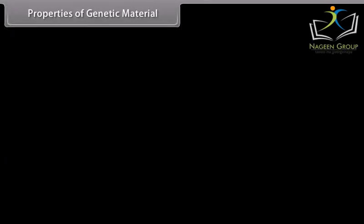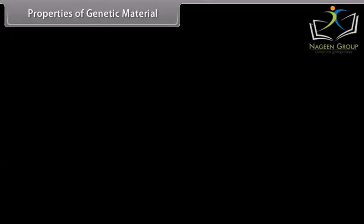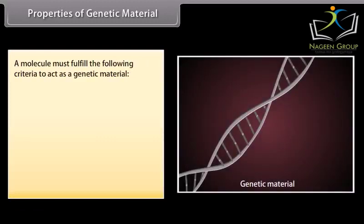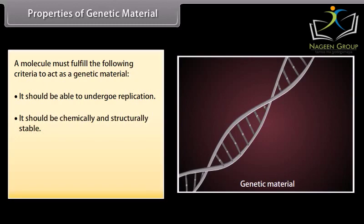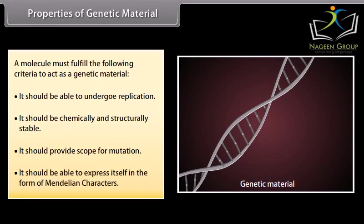Properties of genetic material. A molecule must fulfill the following criteria to act as a genetic material: it should be able to undergo replication; it should be chemically and structurally stable; it should provide scope for mutation; and it should be able to express itself in the form of Mendelian characters.